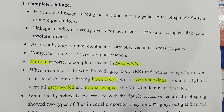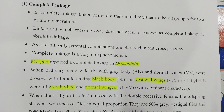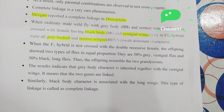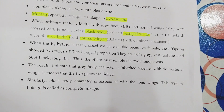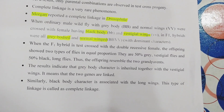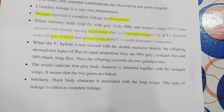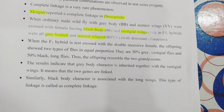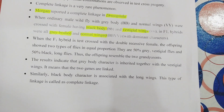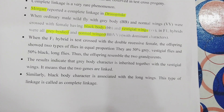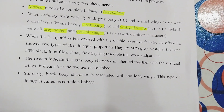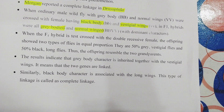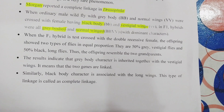Complete linkage was observed by Morgan in Drosophila. When he crossed Drosophila having grey body and normal wings with a female having black body and vestigial wings, he obtained F1 hybrids with grey body and normal wings — grey body being the dominant character. When he subjected them to a test cross with the double recessive parent (black body vestigial wings), all offspring resembled the two grandparents, indicating no crossing over occurred.